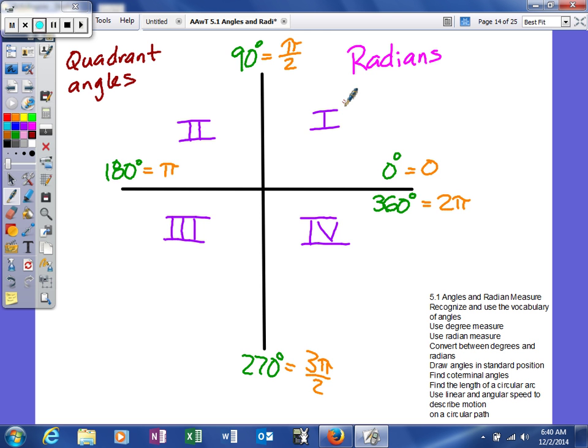Looking at the next one, for quadrant two, your angle would be between 90 degrees and 180 degrees. So 120 degrees, 150, 160, 100, they would all fall in quadrant two. In terms of radians, your radian measure in terms of π would be one half of π to one whole. So basically, 3/4 of π, 2/3 of π, those would all fall into quadrant two.